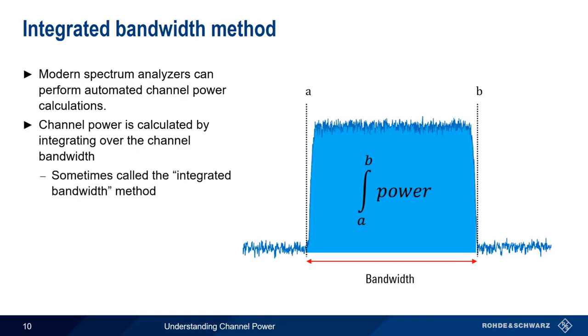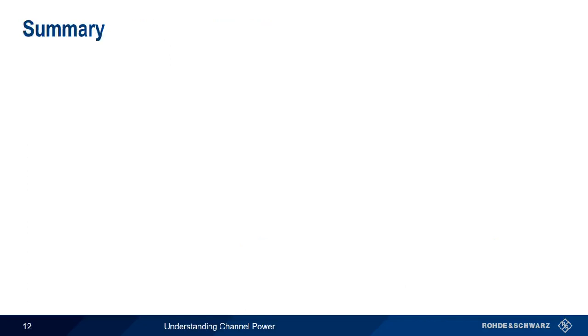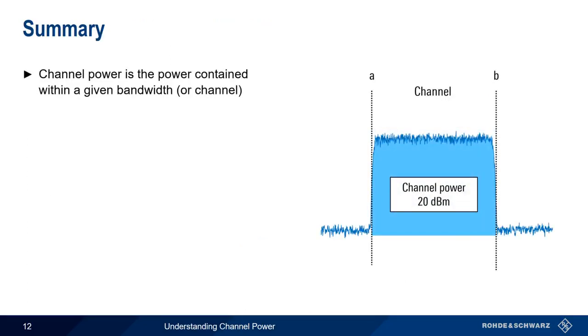And just like the zero span method, this method also requires the use of the RMS detector. So in summary, channel power is the power contained within a channel, that is, power over a given bandwidth or between two limits.